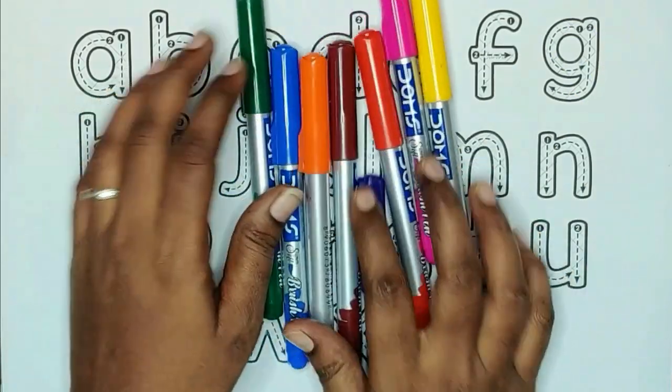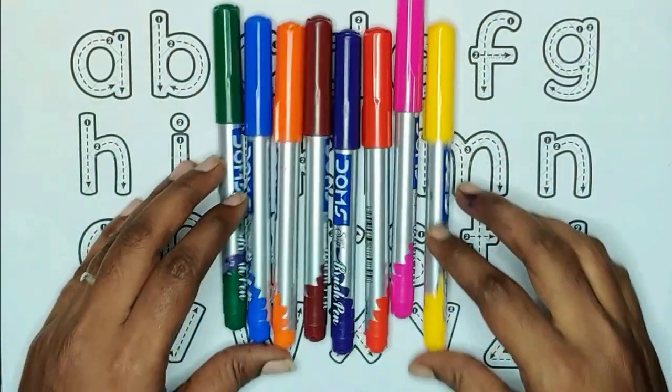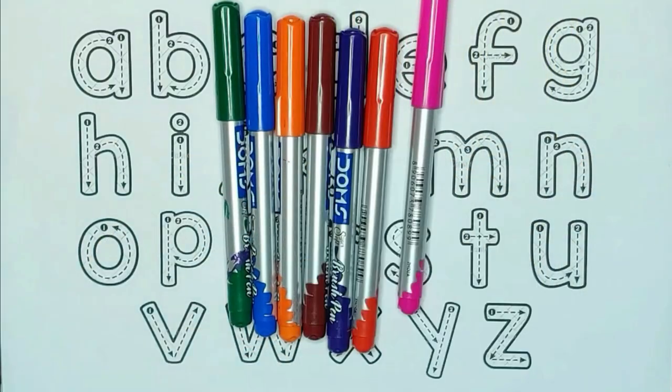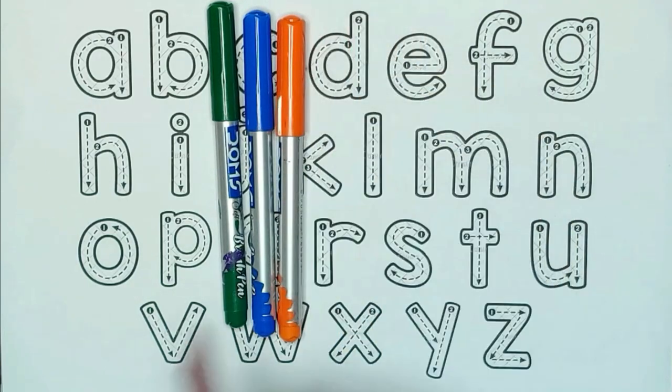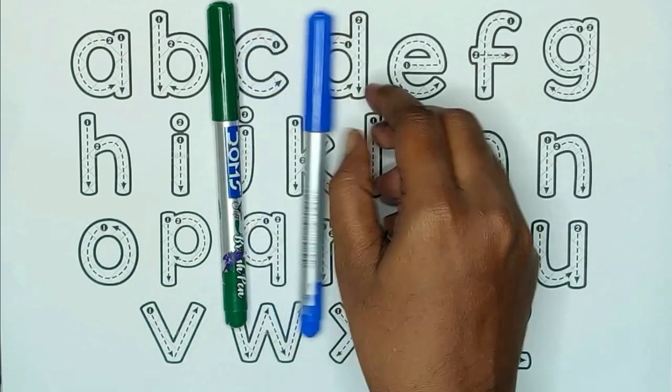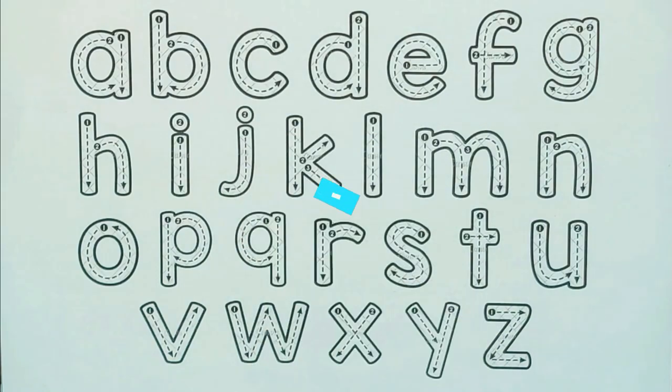Today we are learning alphabets with colors. Yellow color, pink color, red color, violet color, brown color, orange color, blue color and green color.